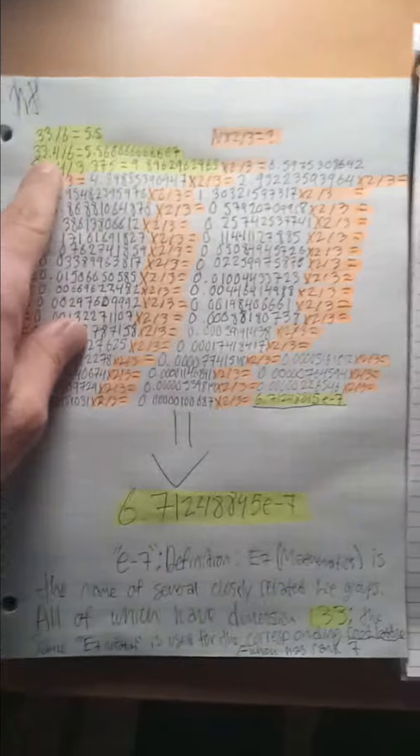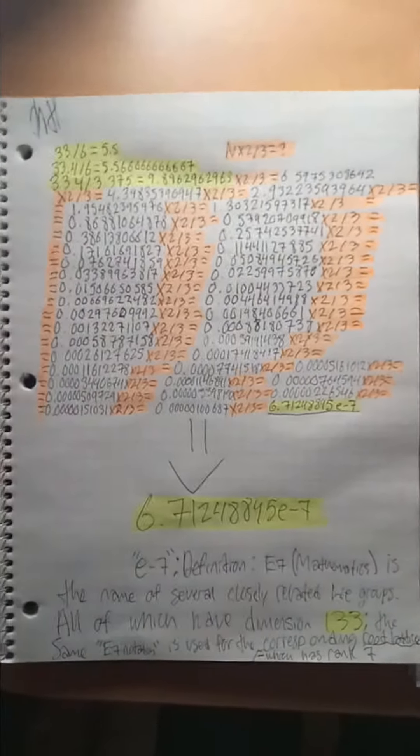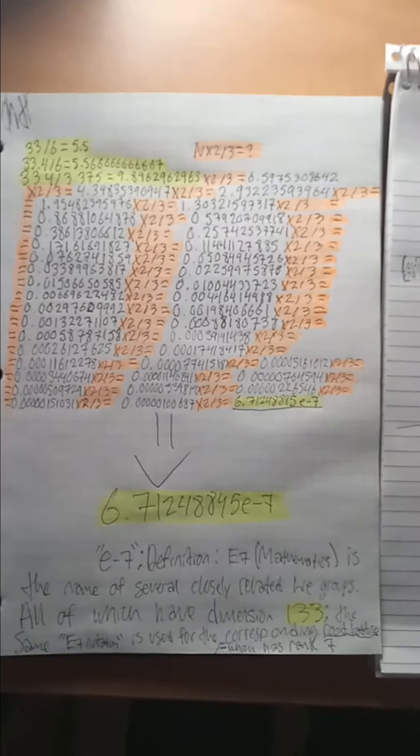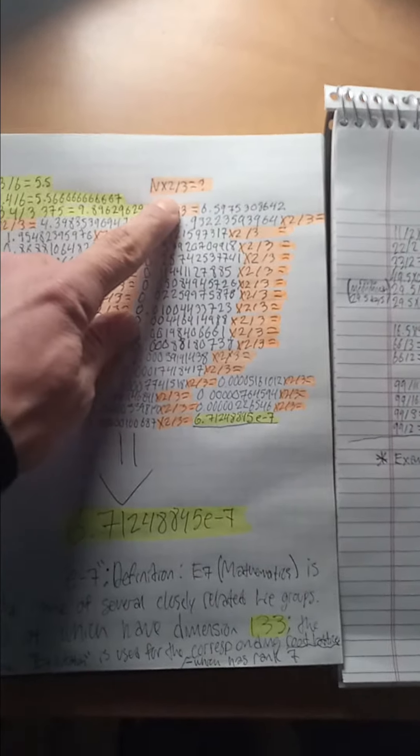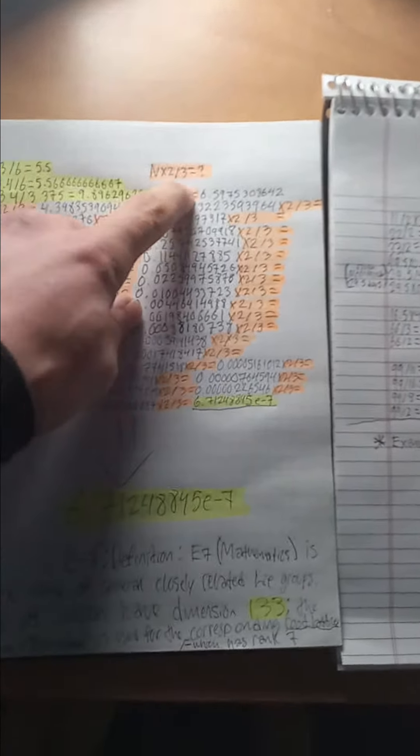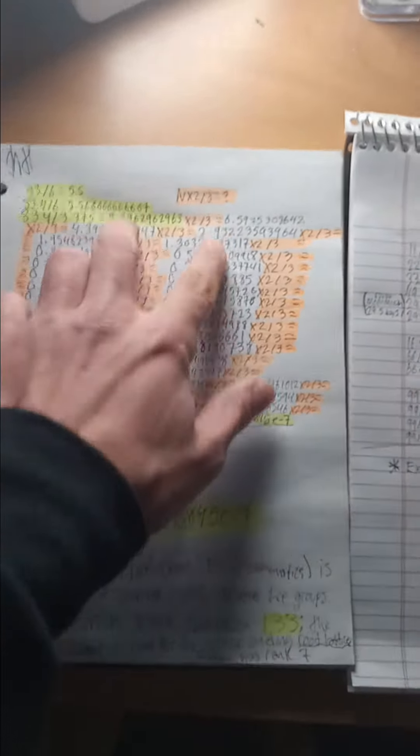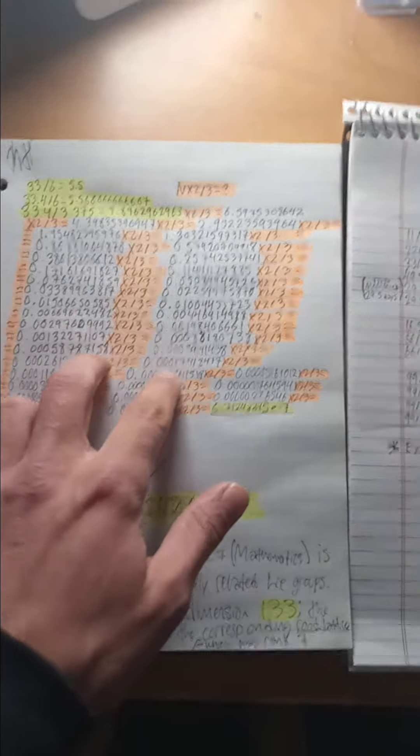So here I am farting around with 33.4 and above that 33 using my nx2 divided by 3 equals something. Anyways, follow the pattern down until it gets as low as it can go and then you get this.